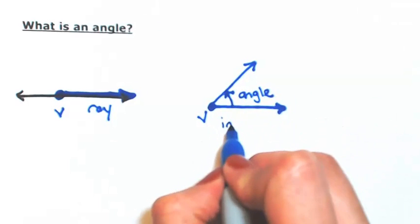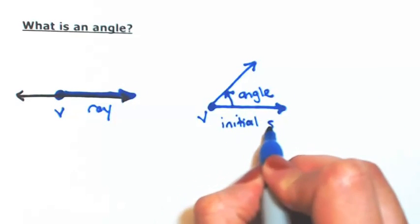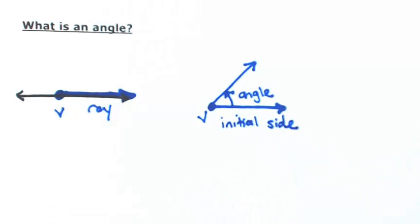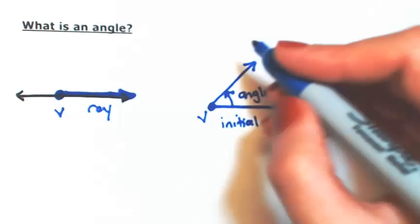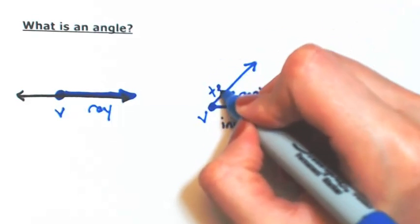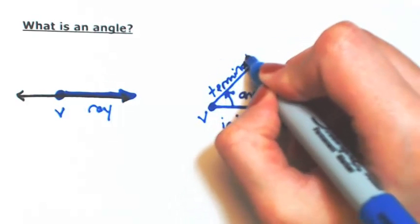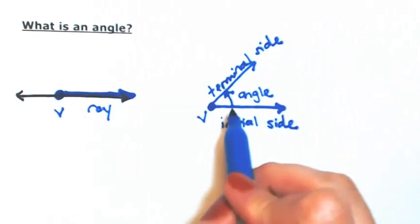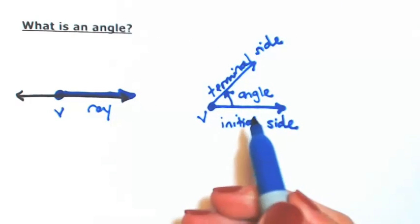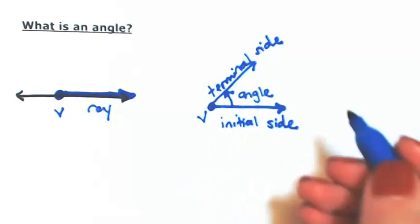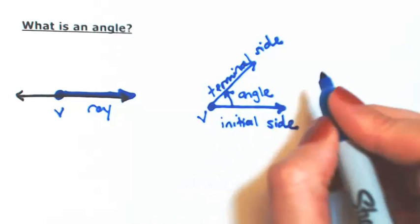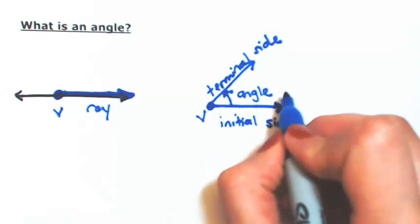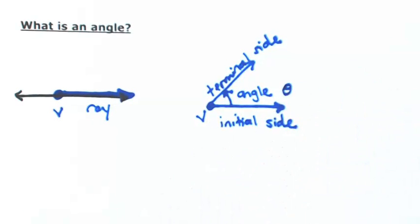This first ray is called the initial side of the angle, and the second one, where it ends, is called the terminal side. Now this angle has a direction that's moving in a counterclockwise manner, so this is considered some angle that's positive. Let me just call it this Greek letter theta.